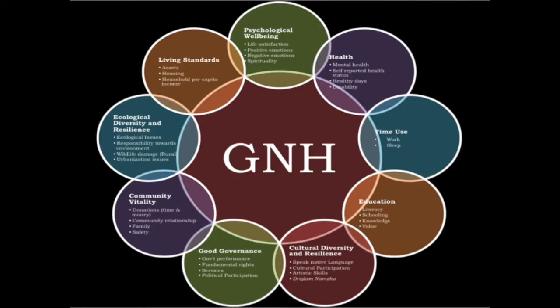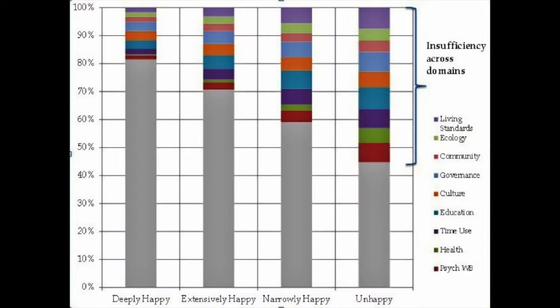The gross national happiness index consists of nine domains that encompass the four pillars, including psychological well-being, time use, community vitality, cultural diversity, ecological resilience, living standard, health, education and good governance. These domains comprise 33 cluster indicators which have 124 variables used to indicate sufficiency in the relevant happiness domain.